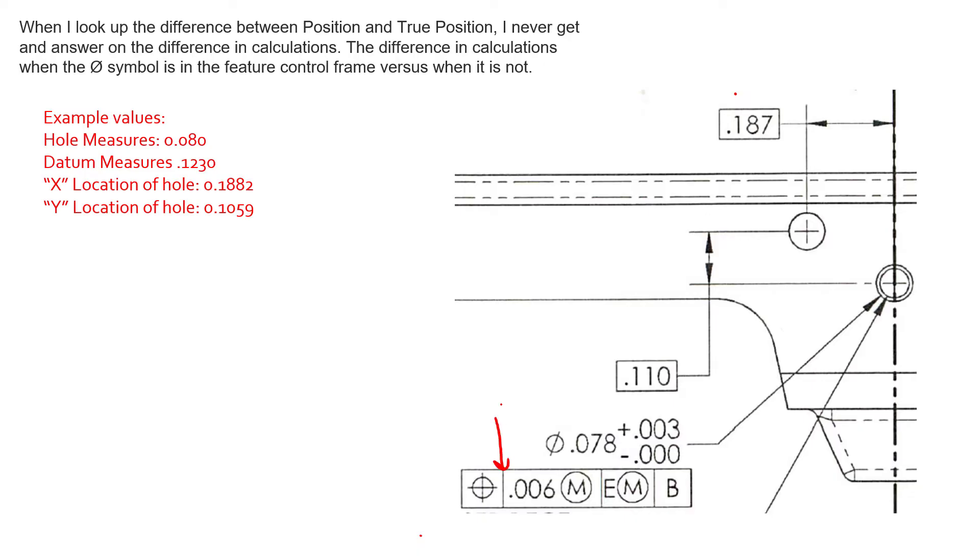Generally, you will almost always see a diameter symbol preceding the tolerance value in the position feature control frame. Whenever we're controlling a diametric feature, the tolerance zone is trying to constrain the location of the axis of that cylindrical feature.